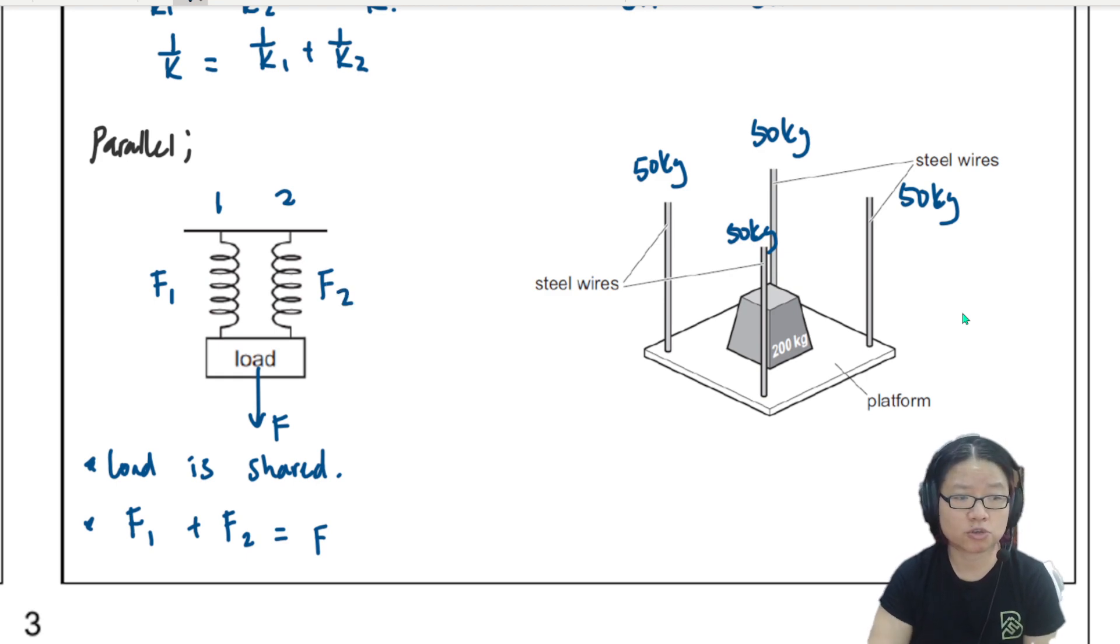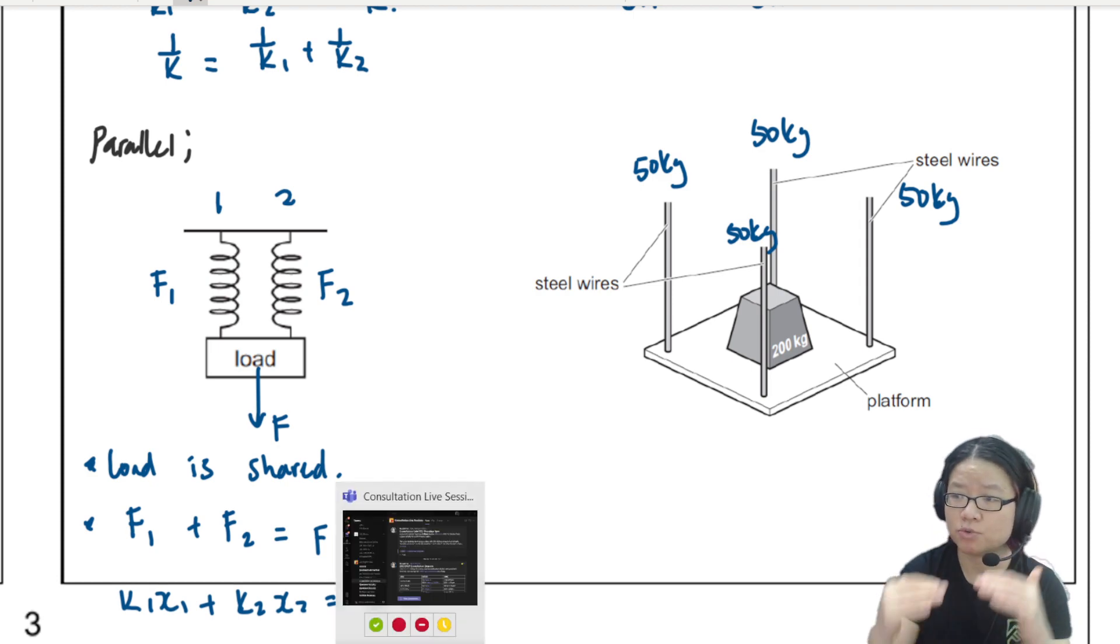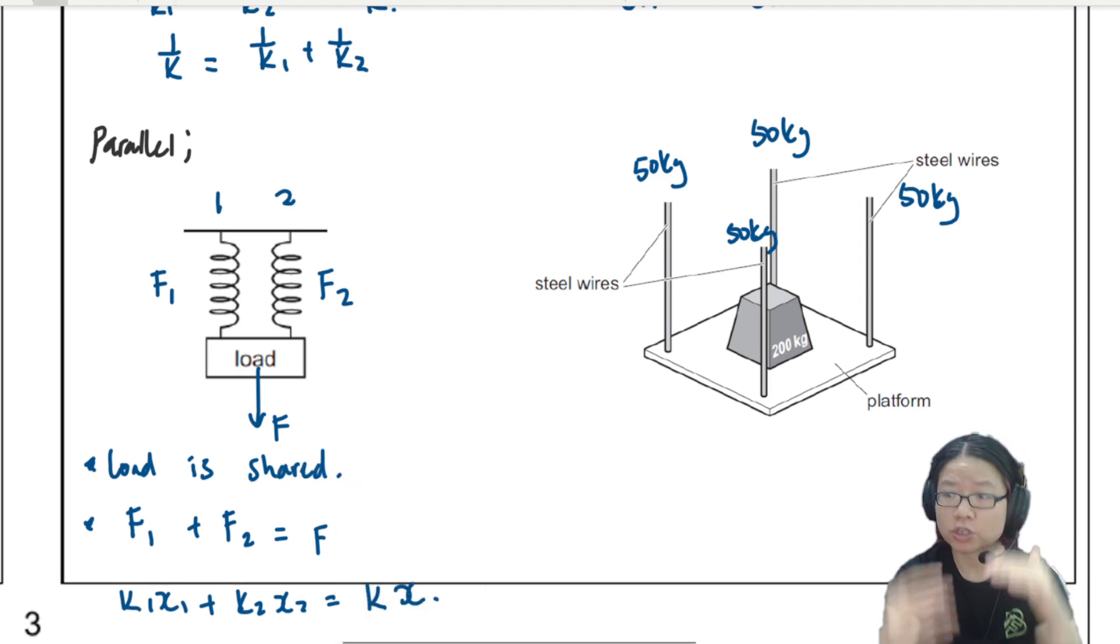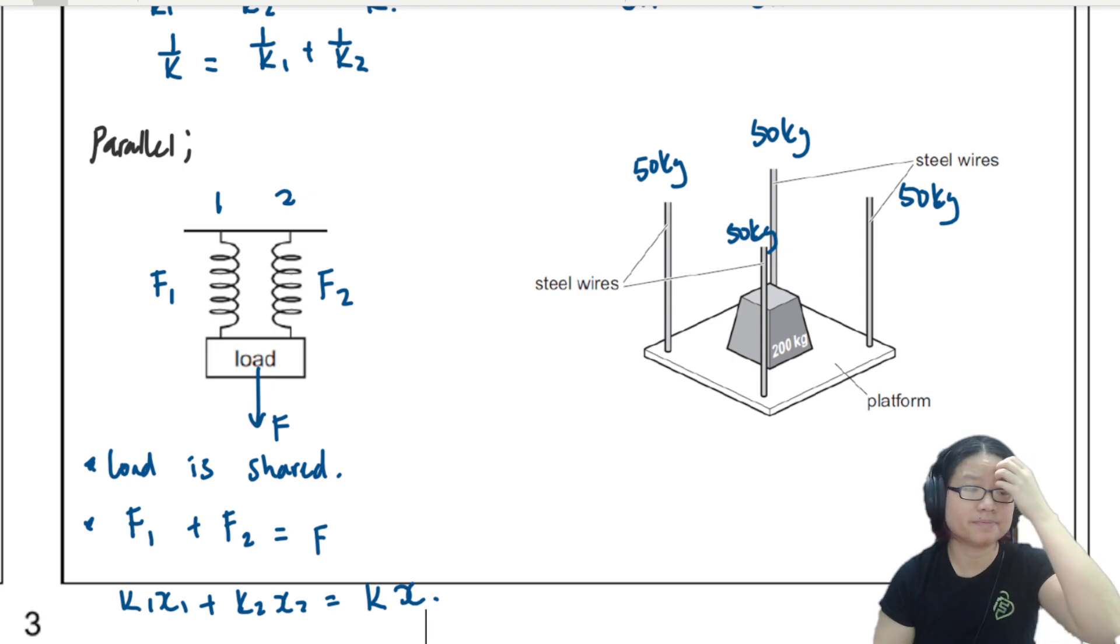So F1 + F2 is F. And then from here, because you know F = KX, so you can write K1X1 + K2X2 is equal to the total KX. And because they are arranged parallel, they should go down together.